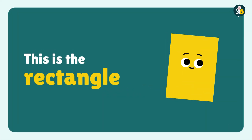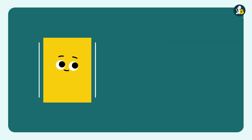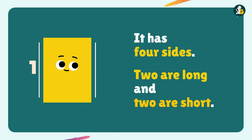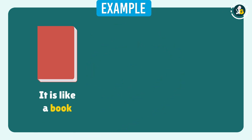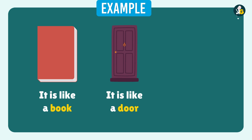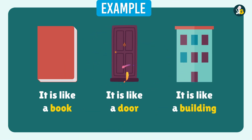This is Rectangle. A rectangle has four sides: one, two, three, four — two are long and two are short. For example, like a book, like a door, and like a building. They all are in rectangle shapes.